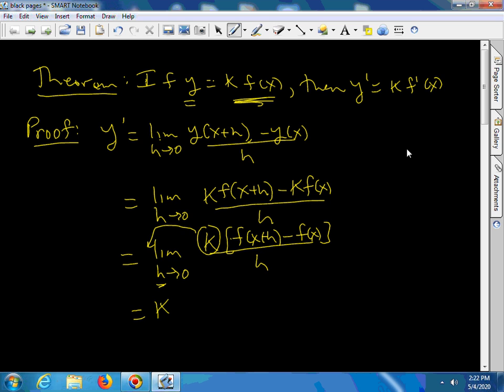And I have k times the limit as h goes to 0 of f of x plus h minus f of x over h. And this here is the derivative of f. This is assuming that the derivative of f exists.